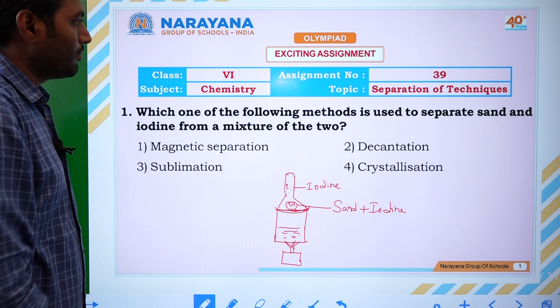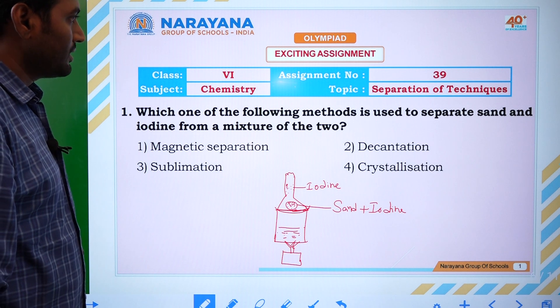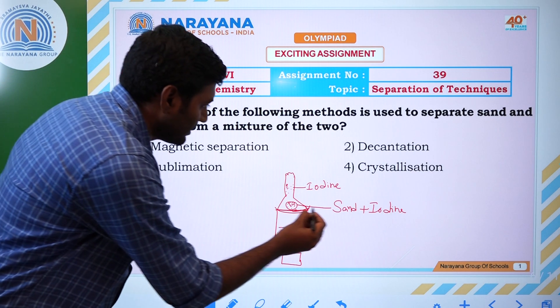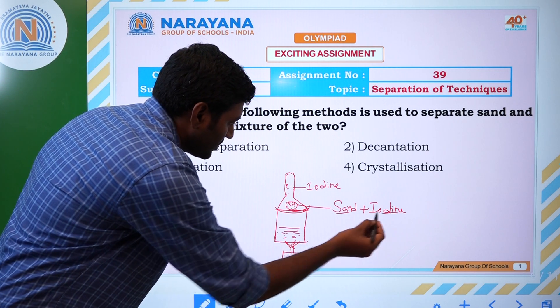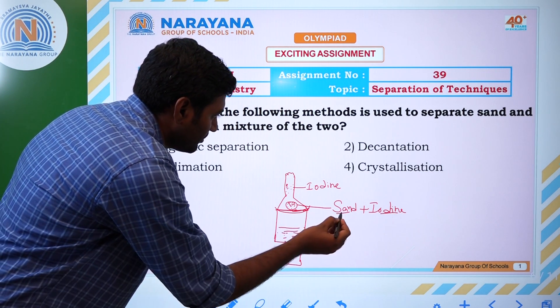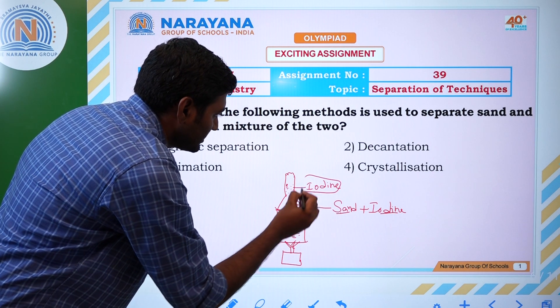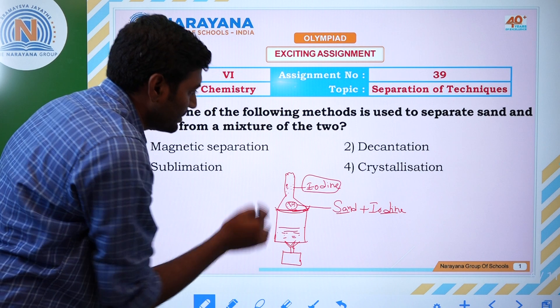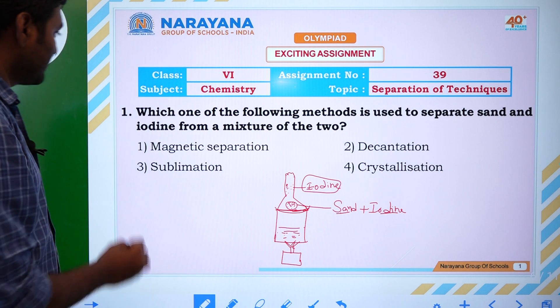First question: which of the following methods is used to separate sand and iodine from the mixture? If you take sand and iodine mixture and heat it, iodine can be easily evaporated. This technique is called sublimation.